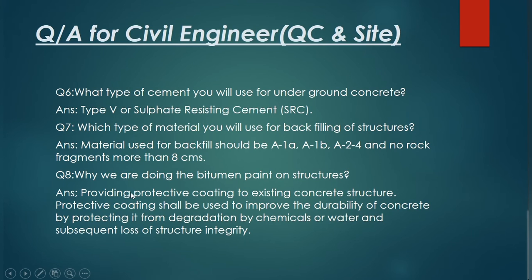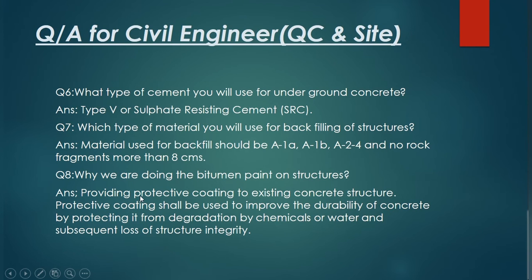Question number eight: why are we doing bitumen paint on a structure? The simple answer is we are doing bitumen paint to make it damp-proof. But the proper answer is: it provides a protective coating to the existing concrete structure. This protective coating improves the durability of concrete by protecting it from degradation by chemicals or water and subsequent loss of structural integrity.